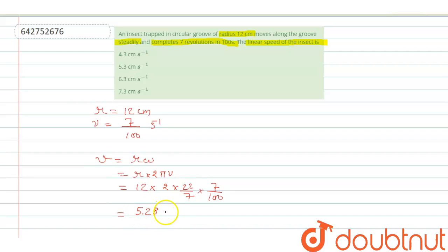5.28 or we can say that 5.3 centimeter per second because we take radius in centimeters. So speed becomes centimeter per second. So we can say that option number 2 is correct.